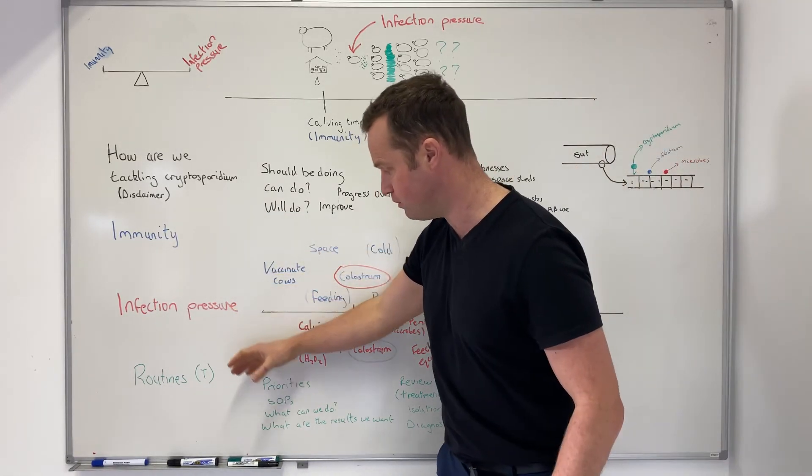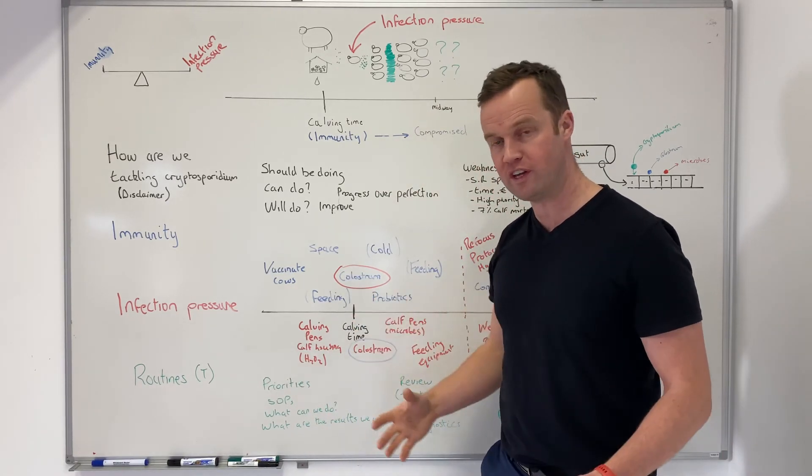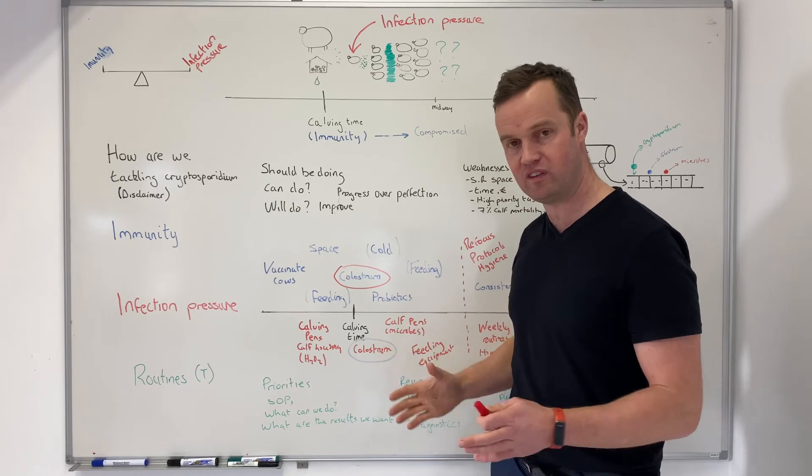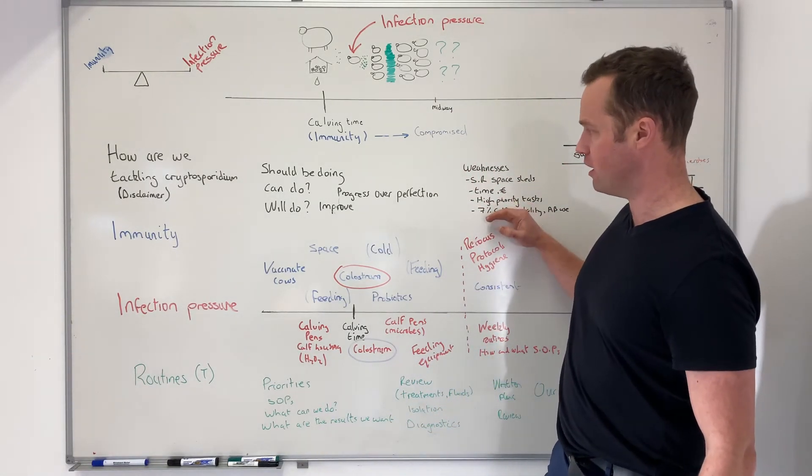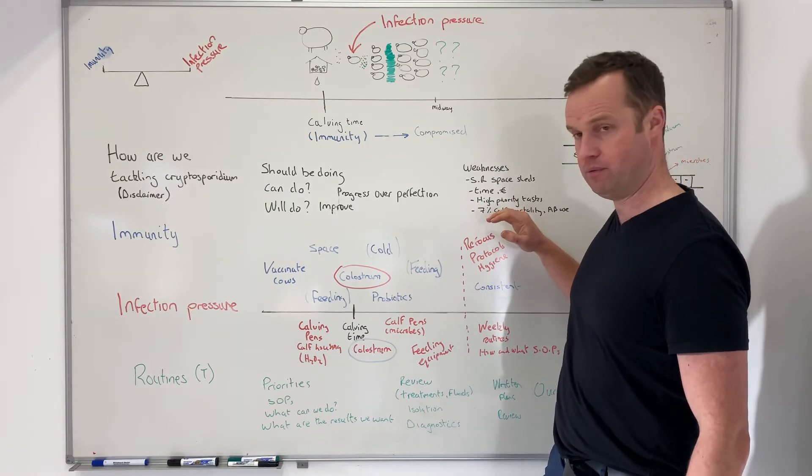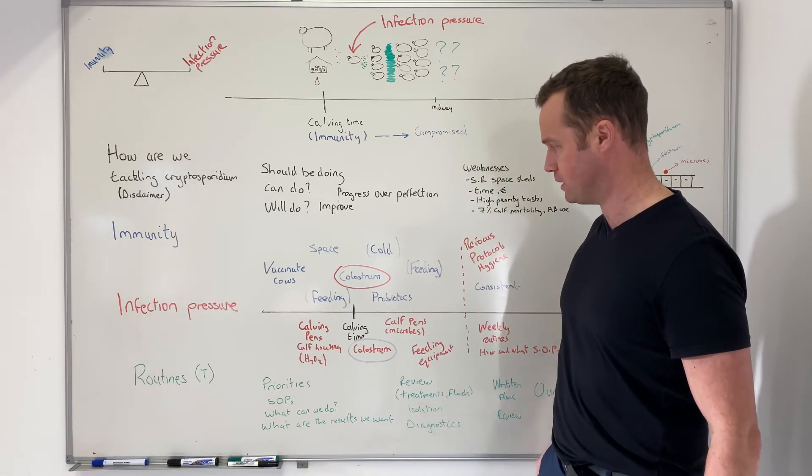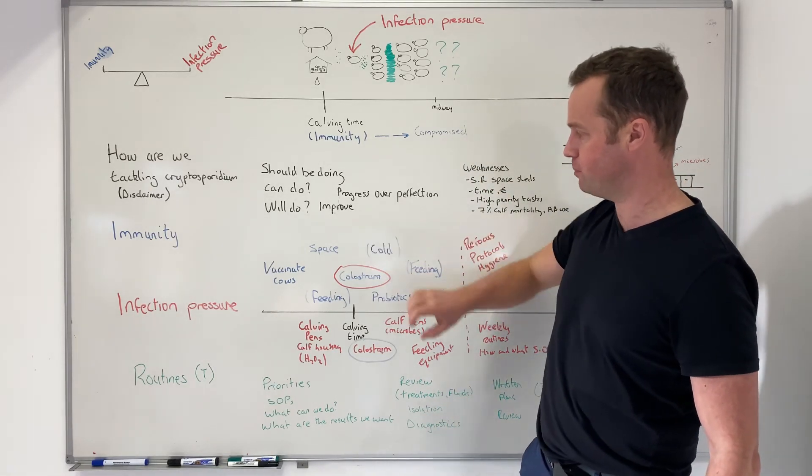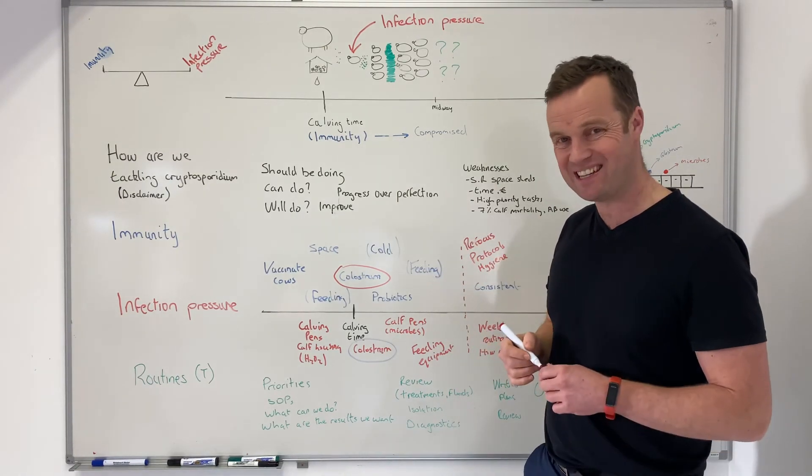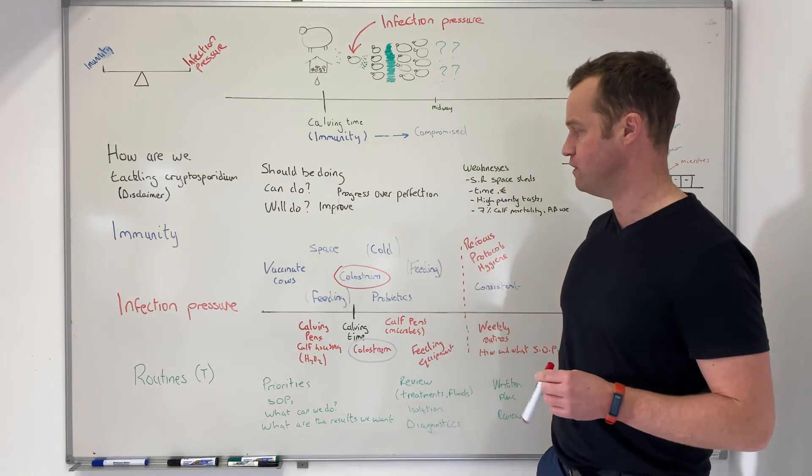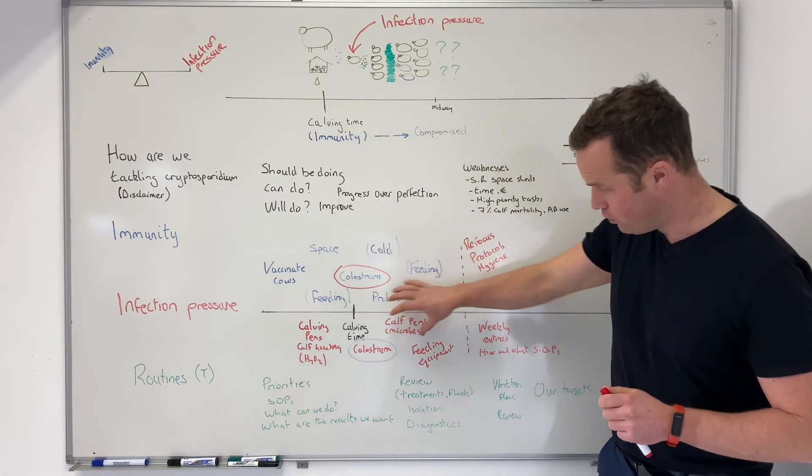Then we've got routines. We've got our standard operating procedures. What can we do? There were loads of things I wanted the lads to do, but they said, look, this is what we can do. And what are the results we want? We've got a higher than we like mortality rate from last year - we want to dramatically reduce that down. We want to improve calf performance. We want to dramatically reduce our antibiotic usage. From an immunity perspective as well, just from a vaccination perspective, one thing I haven't mentioned is we're going to vaccinate intranasally with an RSV vaccine on all our calves as well. We're then going to review how this is going.